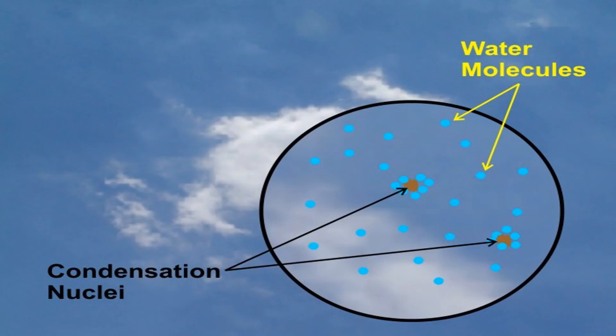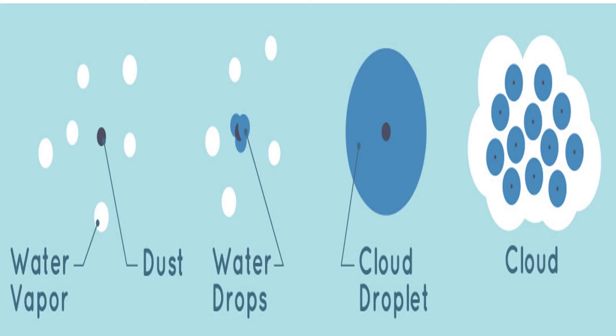When the water converts into vapor, it rises towards the atmosphere, then cools down, transforming itself into clouds. This is the second stage, known as condensation.